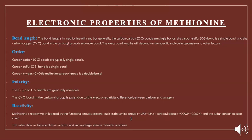The order: our carbon-carbon bonds are single bonds as mentioned previously, so are the C-S carbon-sulfur bonds, and the carbon-oxygen bonds are our shorter ones. For our polarity: our carbon-carbon and carbon-sulfur bonds are generally non-polar, whereas the C=O carboxyl group bonds are polar. For our reactivity: methionine's reactivity is influenced by the functional groups present such as amino, carboxyl, and sulfur-containing side chain. The sulfur atom in the side chain is reactive and can undergo various chemical reactions as well.